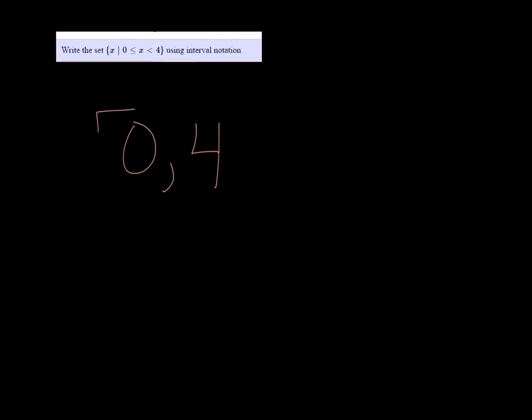Now the 0 will get a bracket because it's included, and 4 will get a parenthesis. The way we know 0 is included is because of that equal to underneath the less than symbol, and the 4 doesn't have that one.